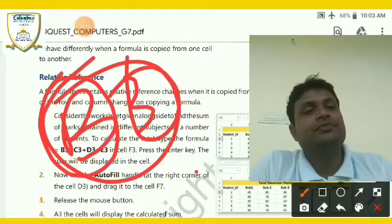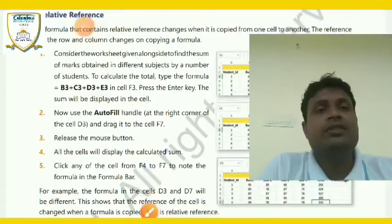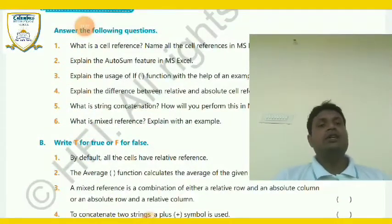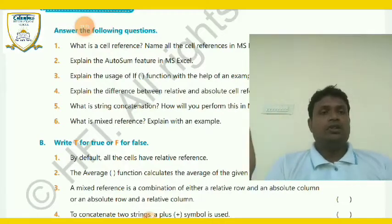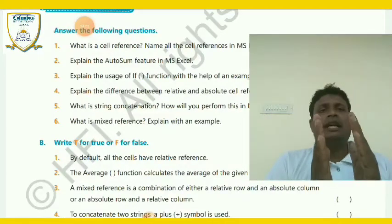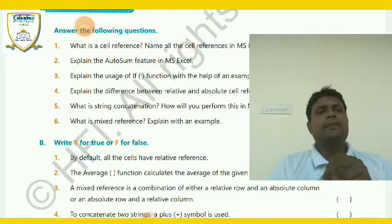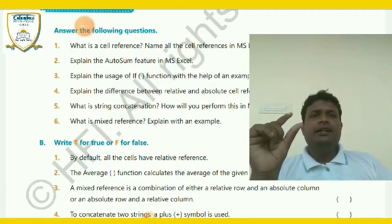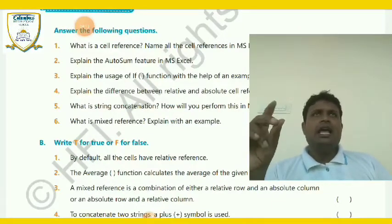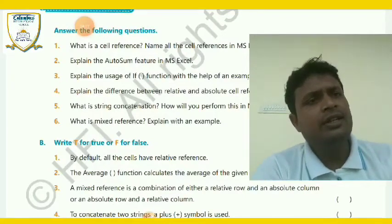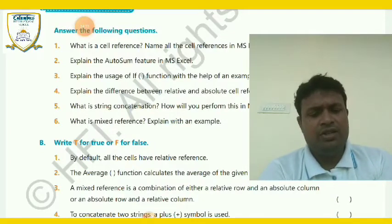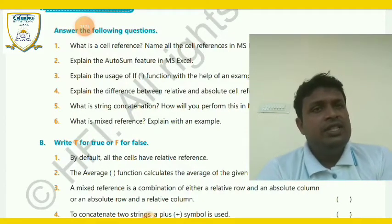The second question asks: Explain the AutoSum features in Excel. AutoSum is used to calculate the sum of numbers. In the AutoSum drop-down, five options are given: the first option is SUM. SUM is a type of function by which we add numbers.